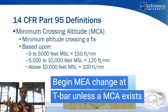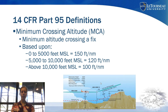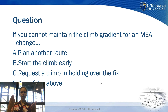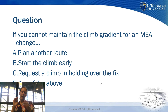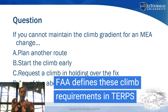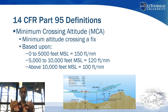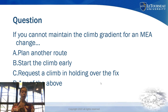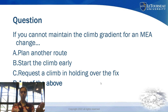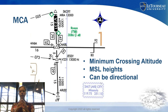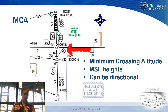At that MEA change, you begin your climb when crossing the point — unless a Minimum Crossing Altitude exists. The Minimum Crossing Altitude, or MCA, is designated on the chart with a little X flag. If you can't maintain the required climb gradient — for example, above 10,000 feet you must climb at 100 feet per nautical mile — you could plan another route, begin your climb early, or hold if ATC approves.